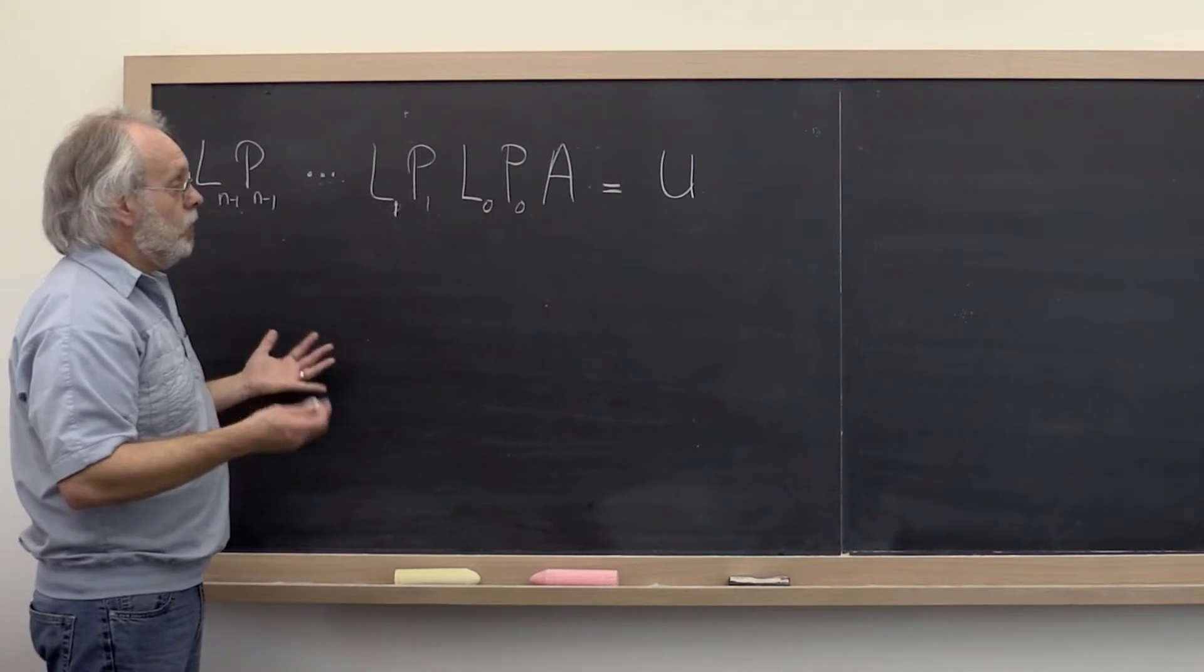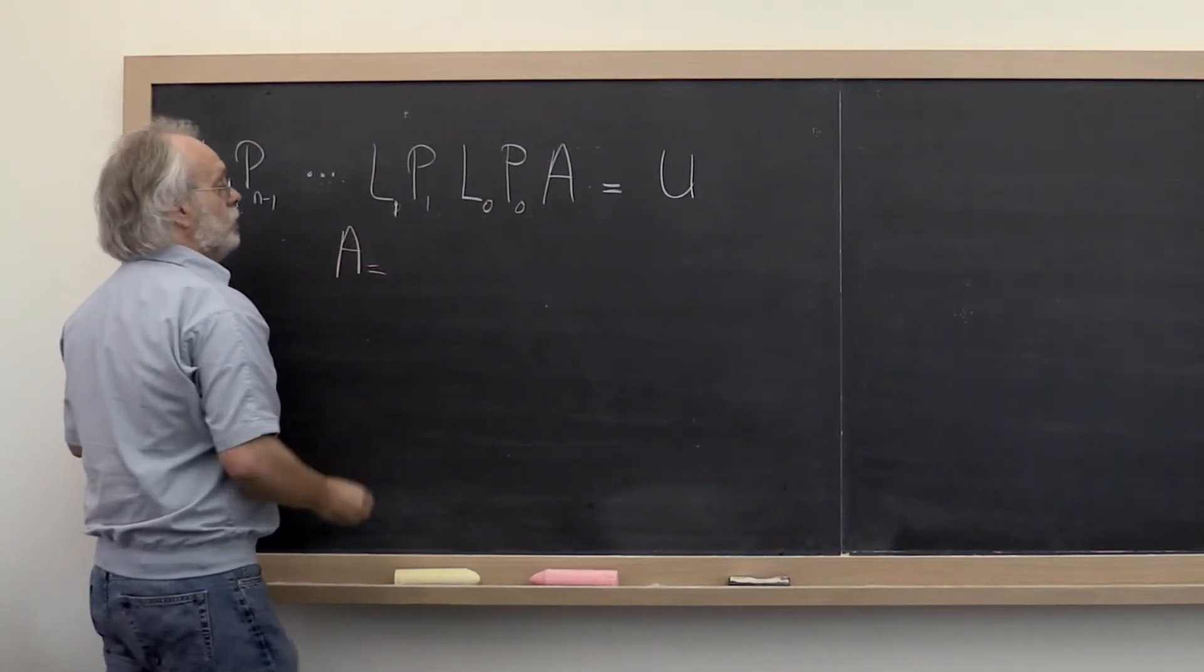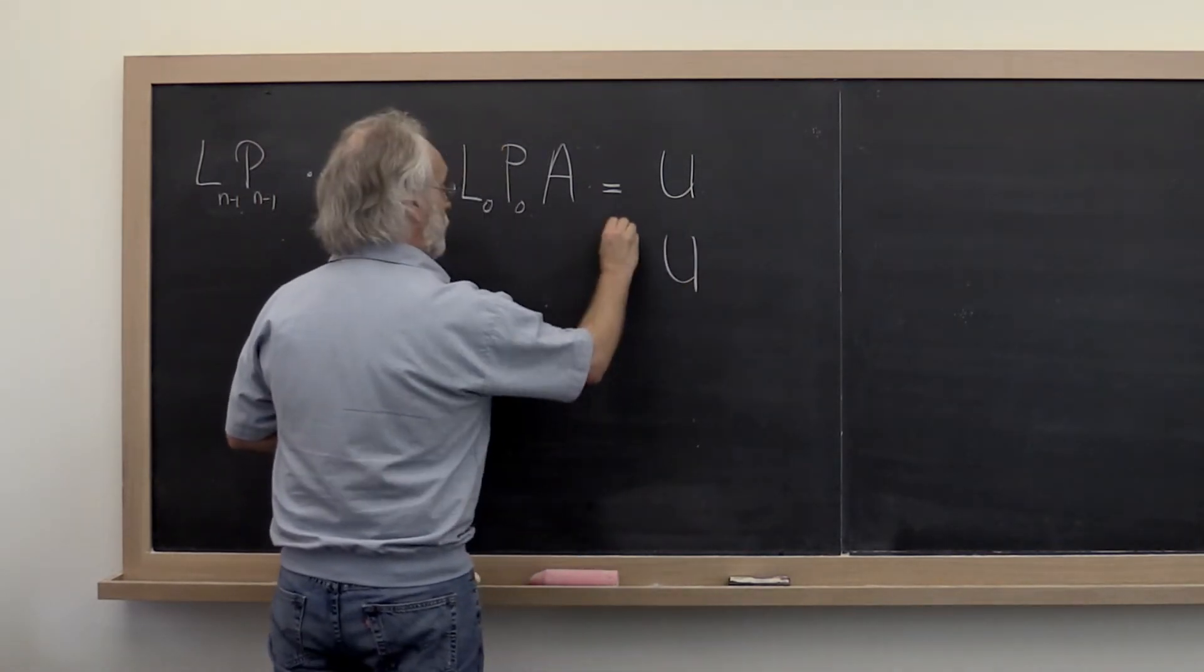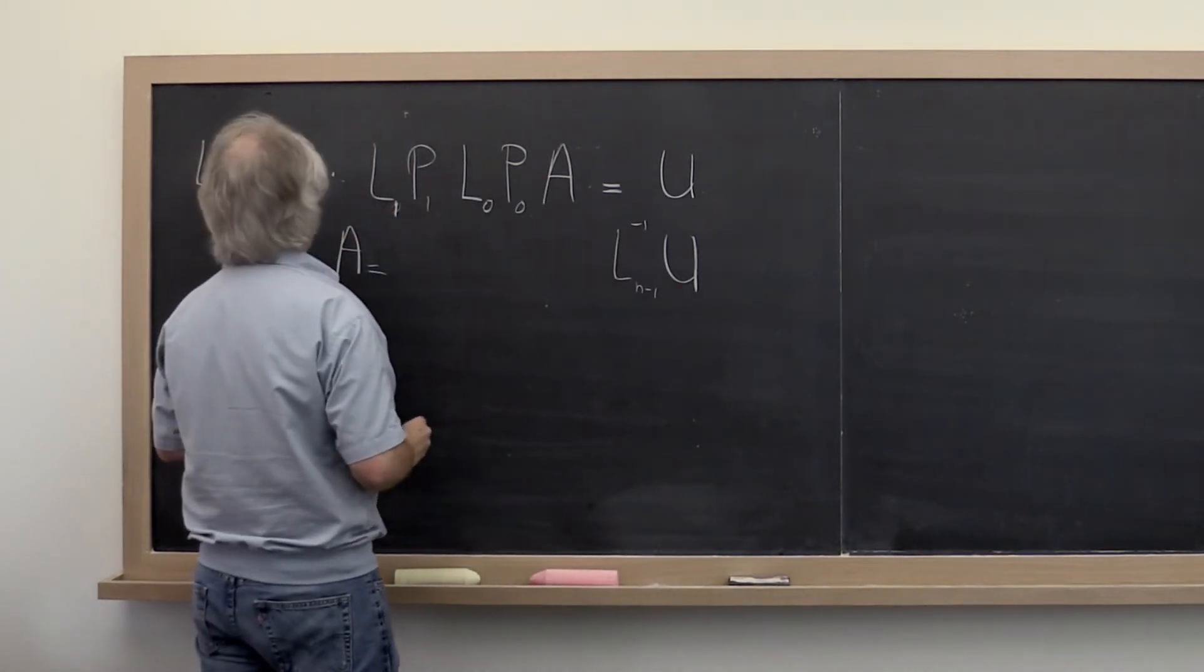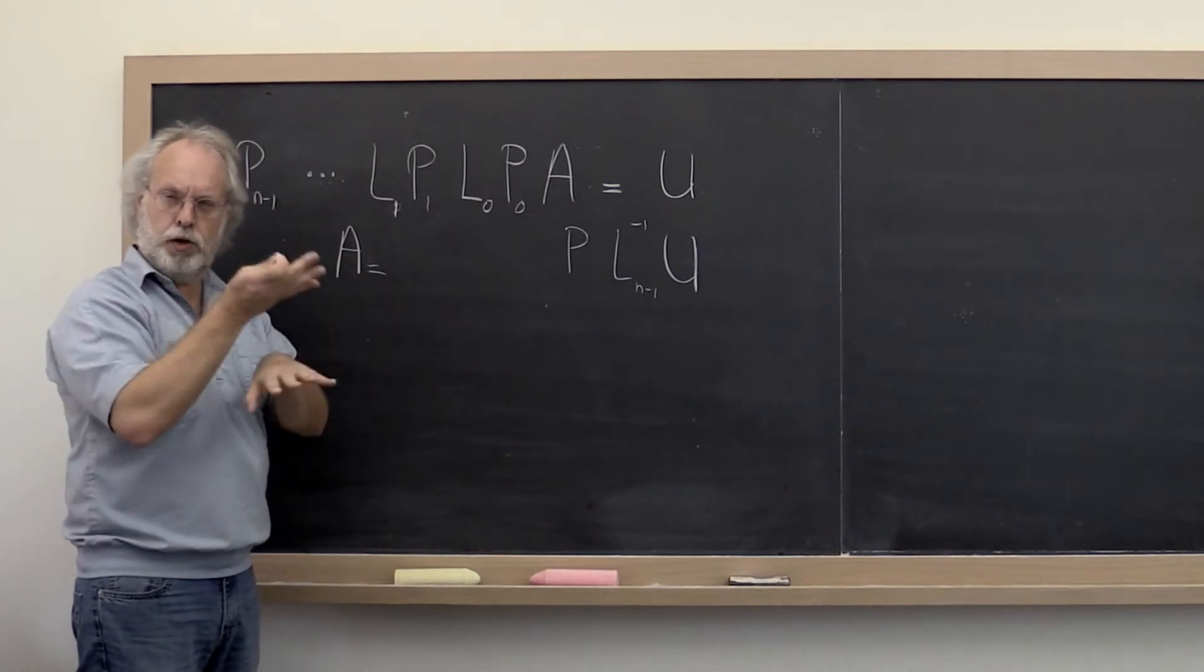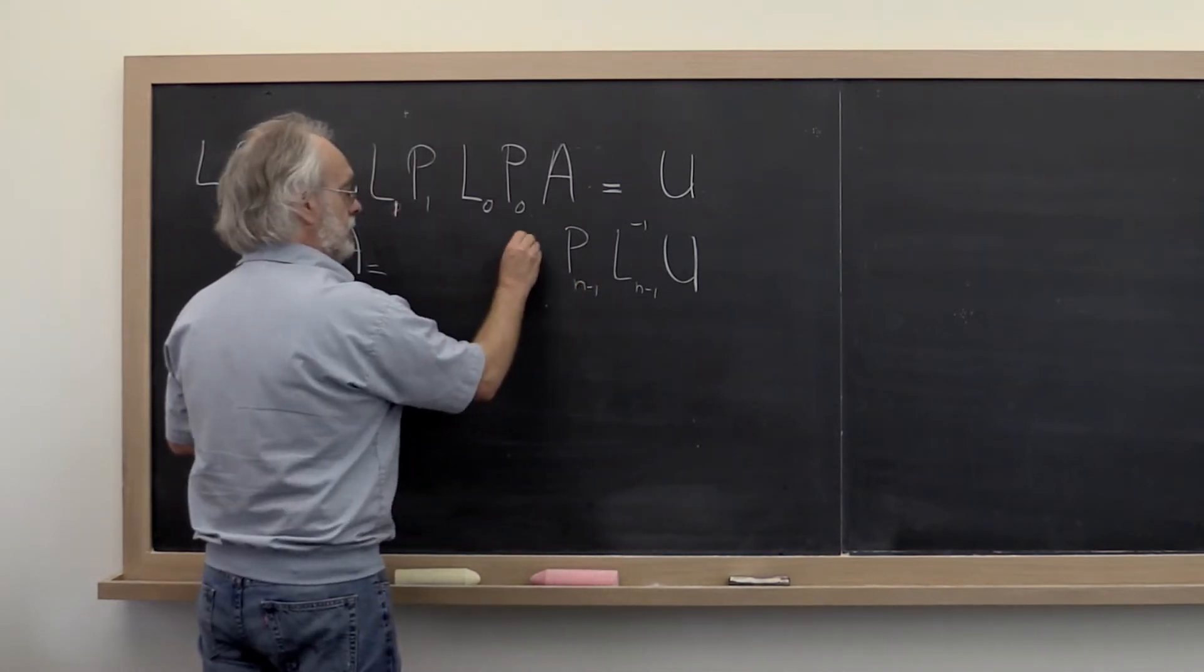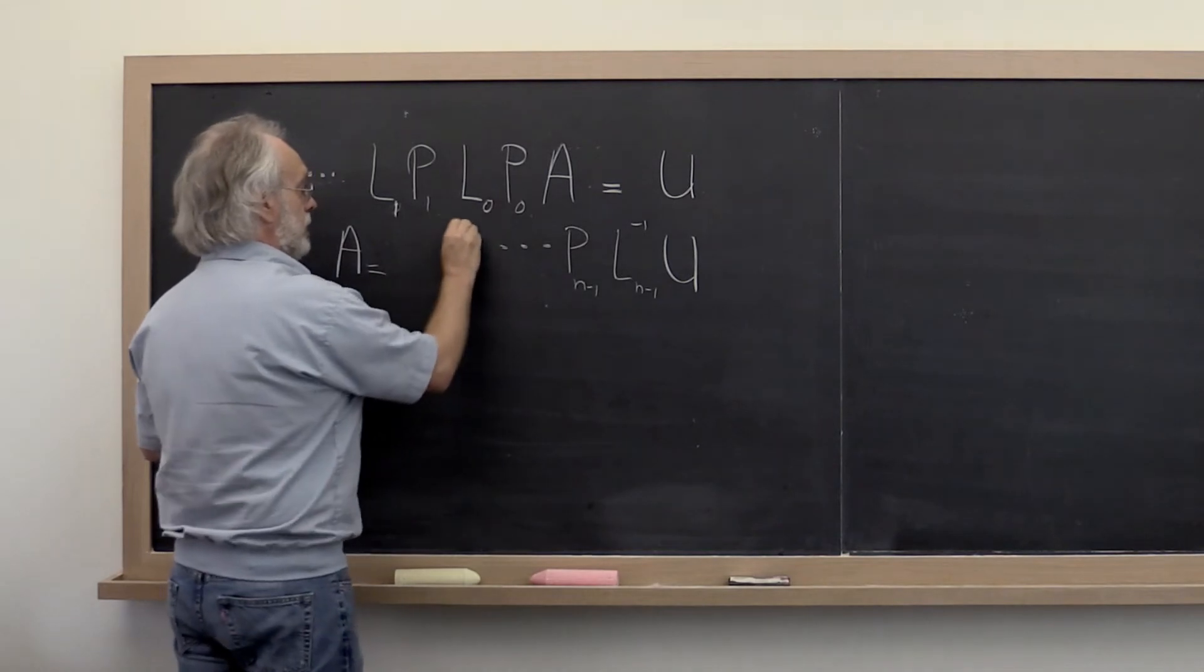All right. Well, we can write this alternatively as A equals, and then we get U with first Ln inverse, Ln minus 1 inverse. And then remember these permutation matrices are very special. They swap two rows only and therefore actually they are their own inverse. And we can write this as this right here.